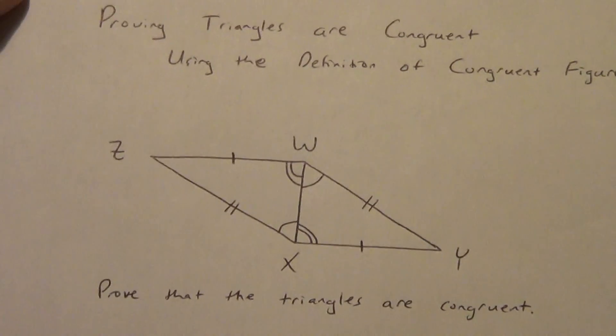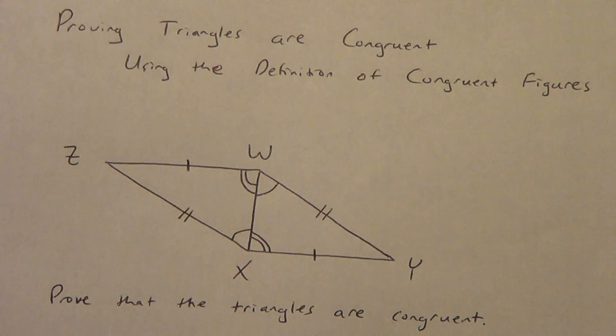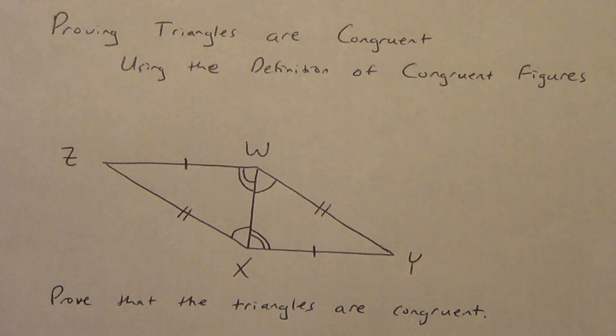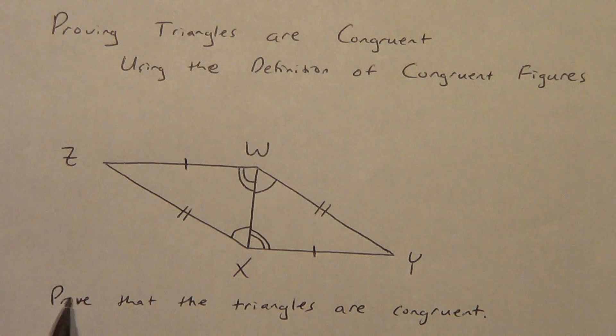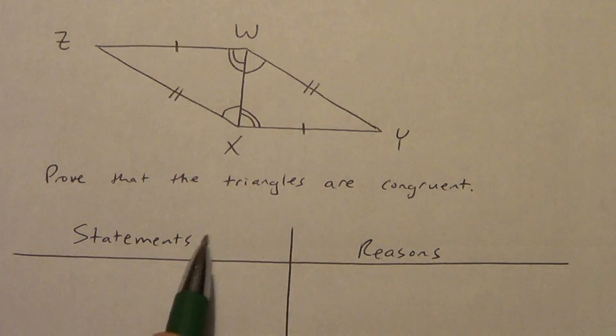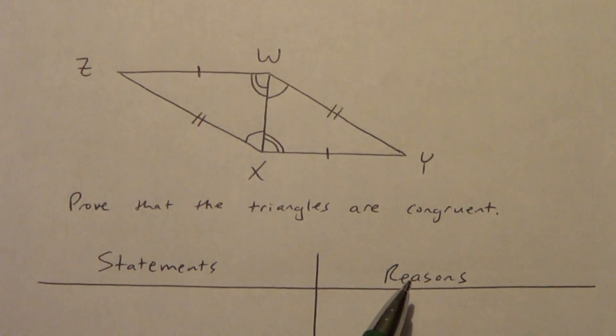So I want you to copy this picture down. We are going to prove triangles are congruent using the definition of congruent figures. So here's your picture. You're going to need to get it copied down. Then we're going to prove that these triangles are congruent. Copy that down. Get your statements reasons column set up. We haven't done this in a while. We're going to do a full proof on this one.